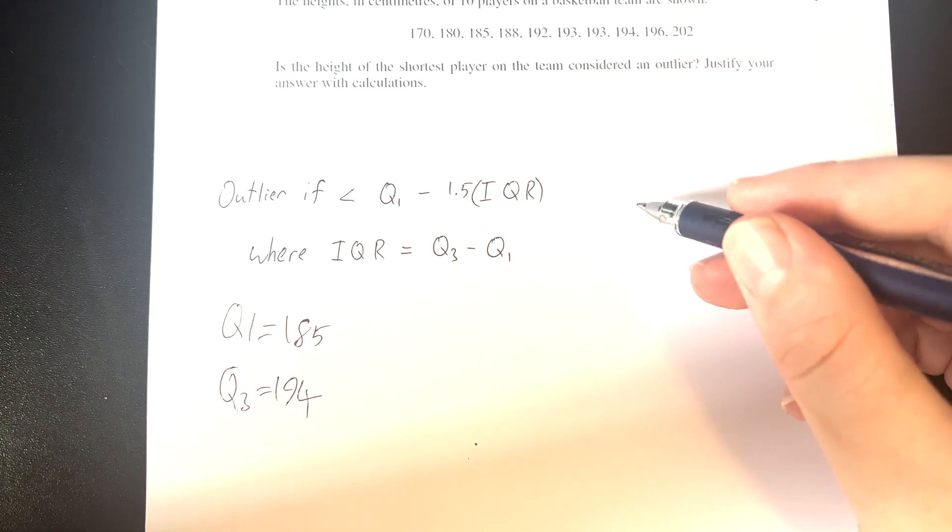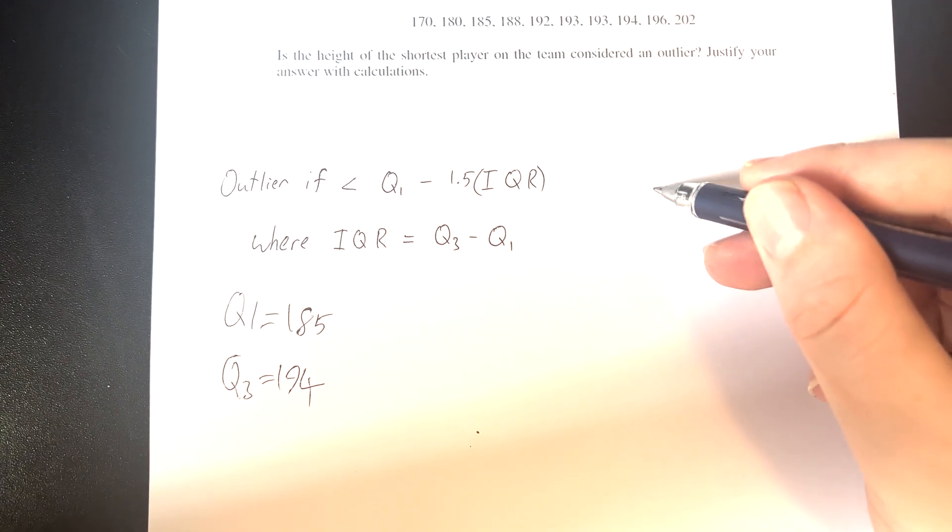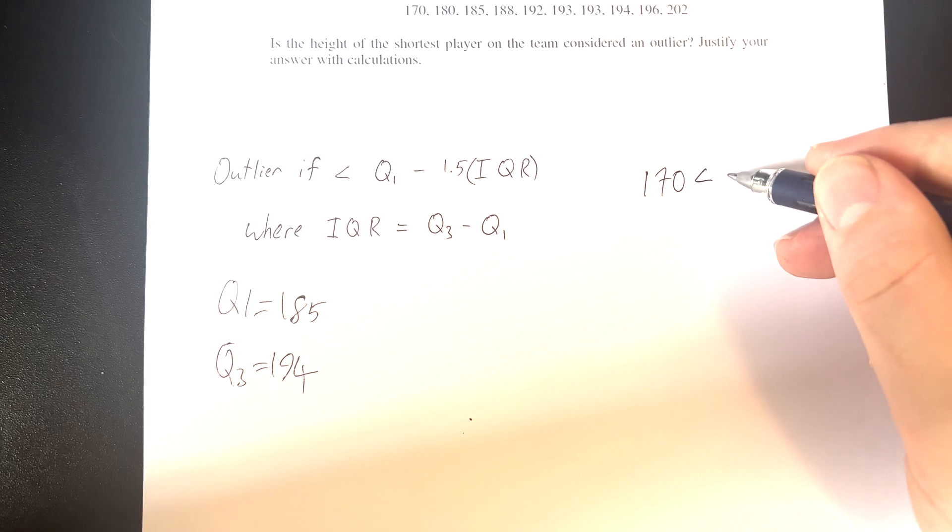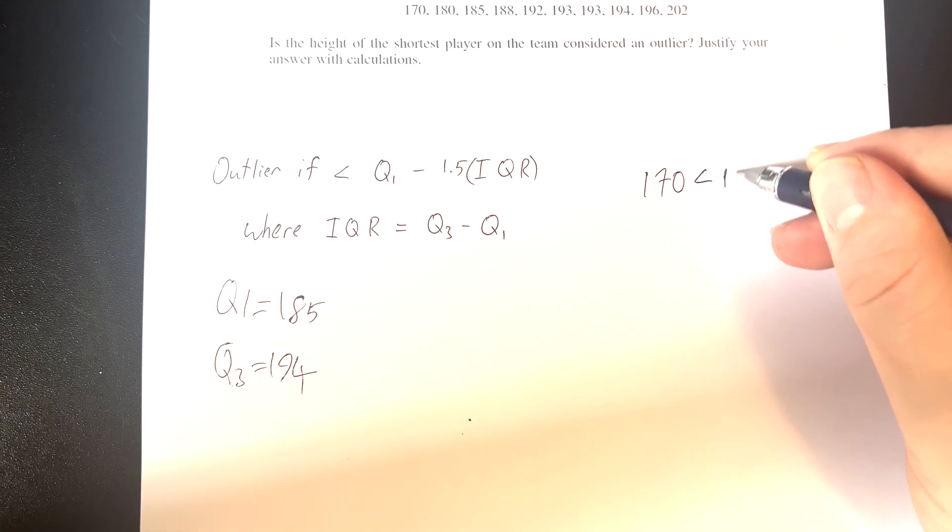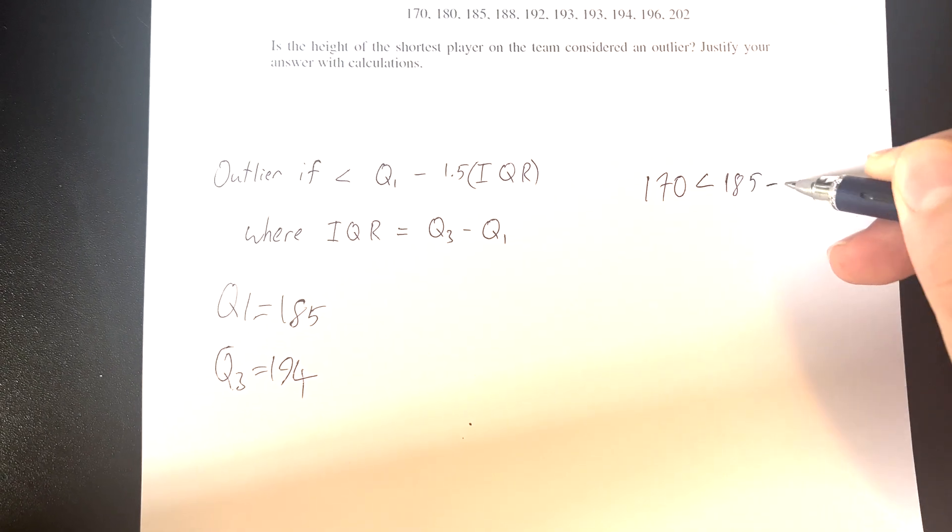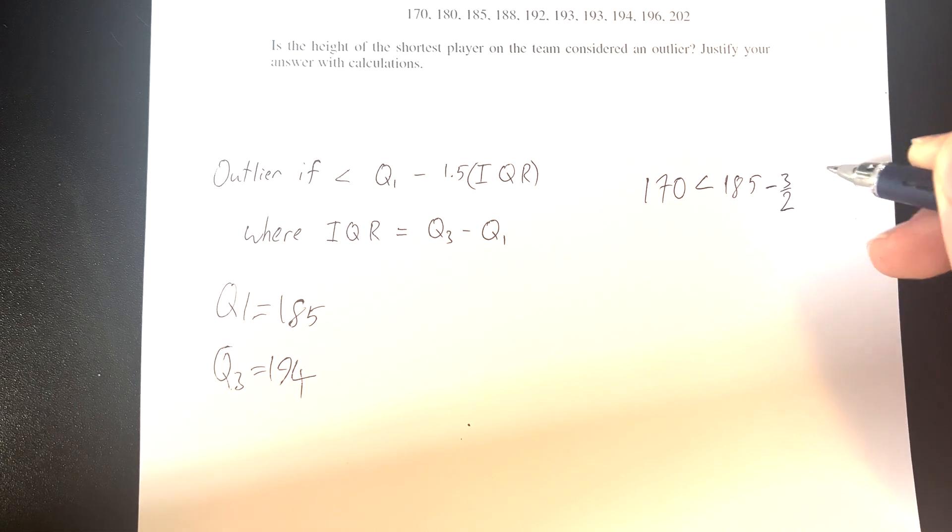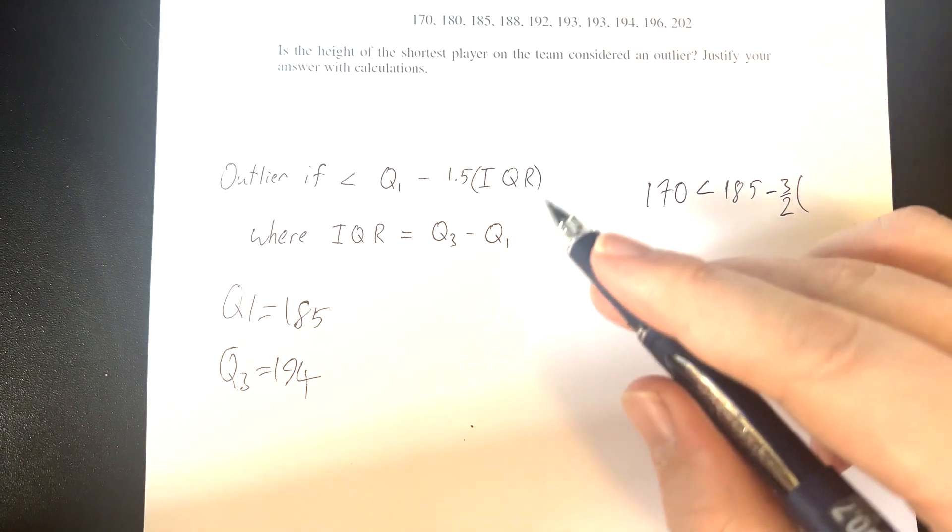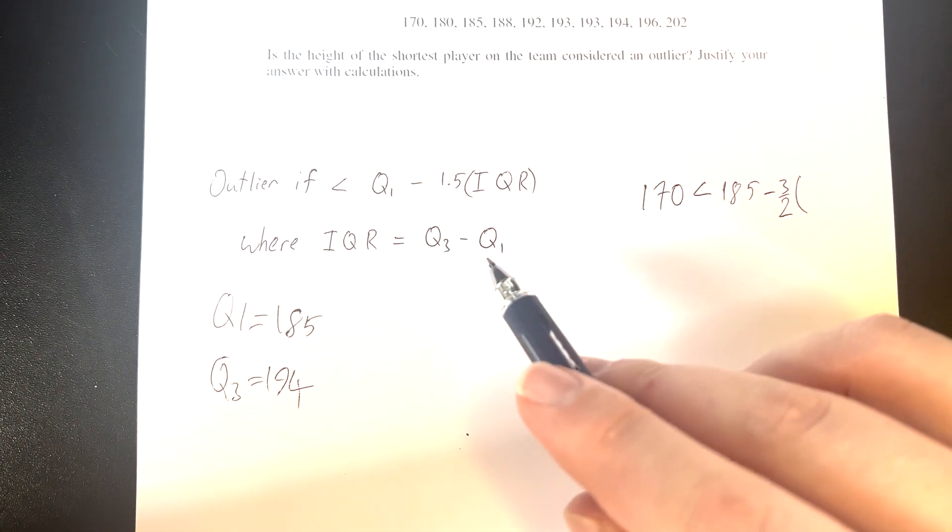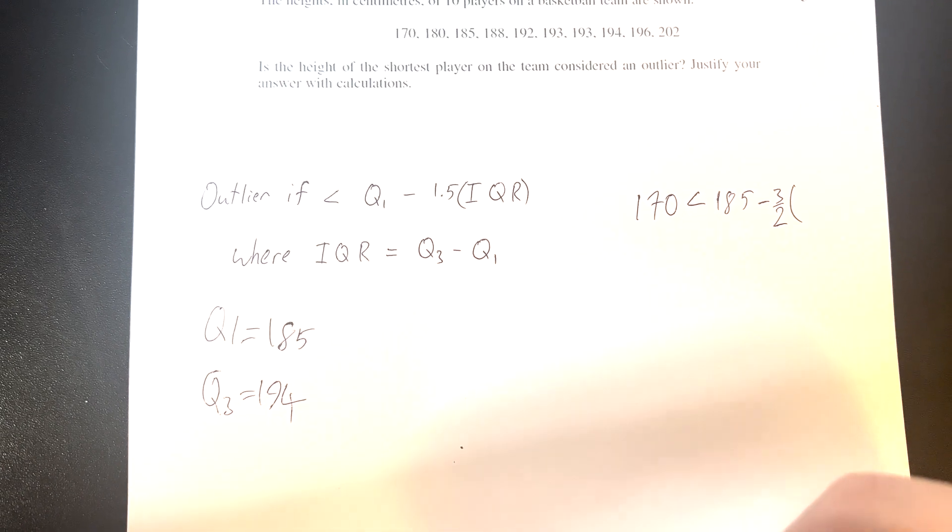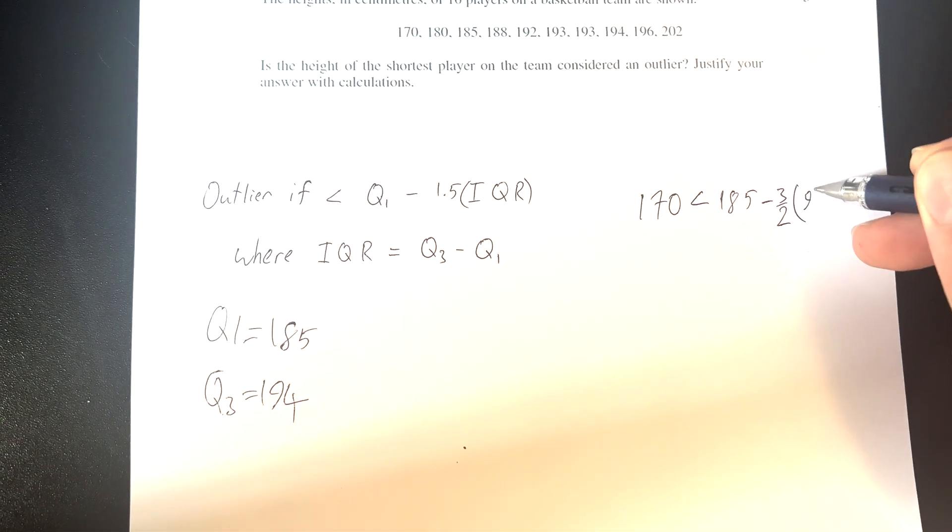Now working it out, let's test if it is an outlier. Is 170 less than Q1, which is 185, minus 1.5, or 3 over 2, times the interquartile range, which is Q3 minus Q1, 194 minus 185, so we can put a 9 in there.